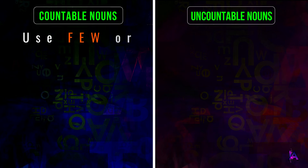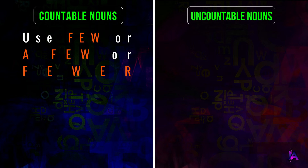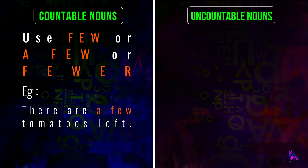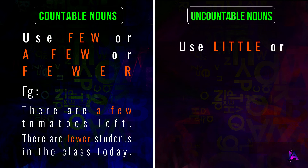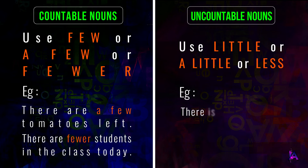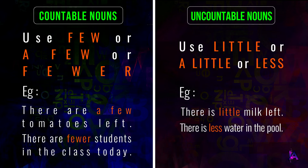Fifth, few, a few, or fewer is used for countable nouns. For example, there are a few tomatoes left, or there are fewer students in the class today. But use little, a little, or less for uncountable nouns — there is little milk left, there is less water in the pool.